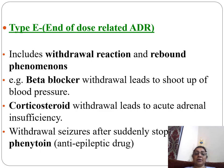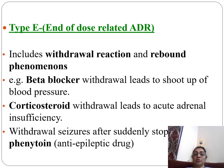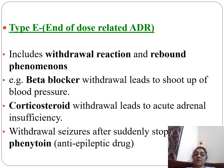Type E, or end-of-dose reactions, includes withdrawal reactions or rebound phenomena after stopping therapy. Beta-blocker withdrawal leads to a shoot-up in blood pressure due to up-regulation of beta receptors. Corticosteroid withdrawal leads to acute adrenal insufficiency. Withdrawal seizures can occur after suddenly stopping phenytoin. These are withdrawal reactions or rebound phenomena due to end of drug therapy.